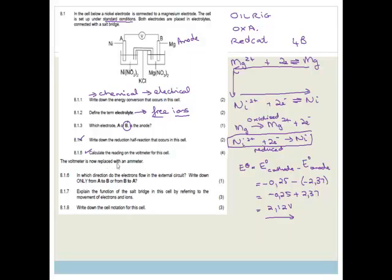It says now the voltmeter is replaced with an ammeter. It says in which direction do electrons flow in the external circuit. Write down only A to B or B to A. So this is really easy. It's alphabetical. It always travels from the anode to the cathode. So therefore, it is going to be from B to A.